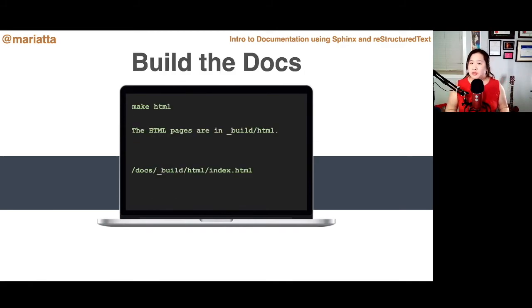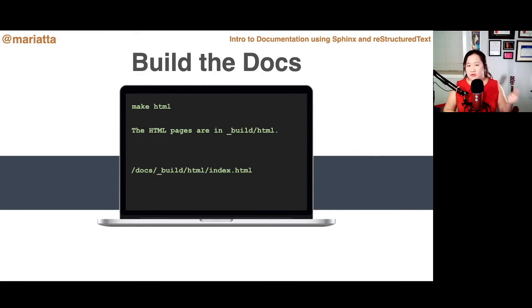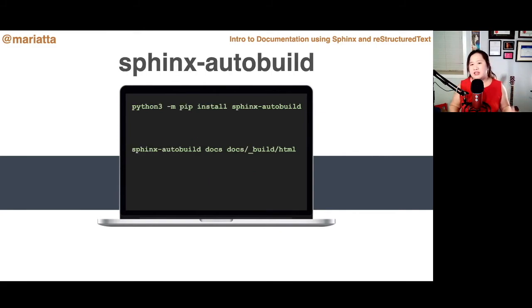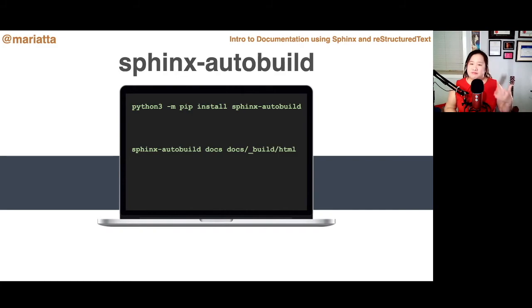When you're ready to build your docs and generate HTML, just type 'make html' in the terminal. All the HTML will be generated under the build/html directory, and you can open the index file in your browser. If you find it tedious to rebuild each time you make changes, install a third-party extension called sphinx-autobuild with pip install sphinx-autobuild. This tool detects changes in your documentation and automatically rebuilds and refreshes the browser for you.